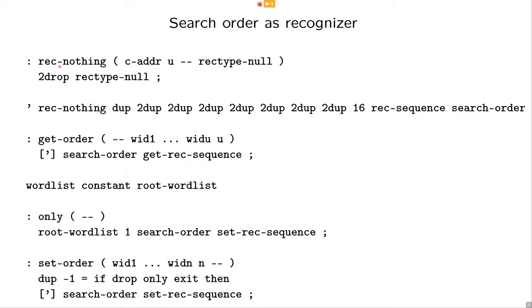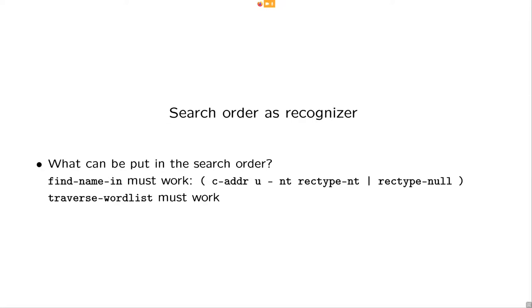What is the search order? The search order is a recognizer sequence and we start by filling it with 16 placeholder recognizers. So, these are basically no-op recognizers that always return rec-type-nil. So, we now have a search order. Here we have the thing we need to do for dealing with only. And this line is also for dealing with only. And here we see if we want to set-order and don't have to deal with only, we do a set-rec-sequence on the search order.